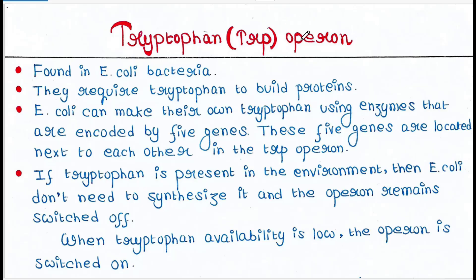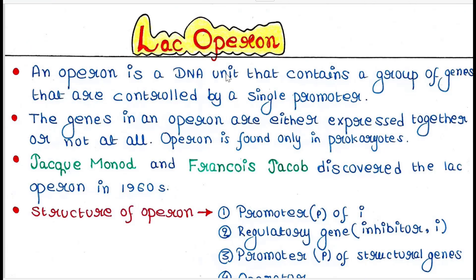So what is an operon? We discussed this in our last lecture when we talked about the lac operon. Basically, an operon is a DNA unit that contains a group of genes controlled by a single promoter. More than one gene is controlled by a single promoter, which is only possible in prokaryotes. Eukaryotes do not have such a system, and the genes in an operon are either expressed together or not at all.